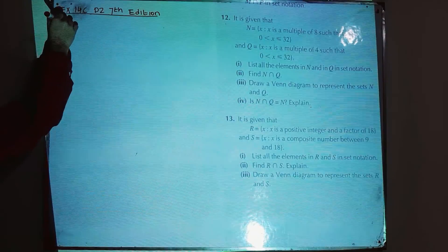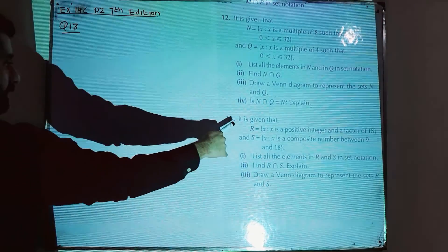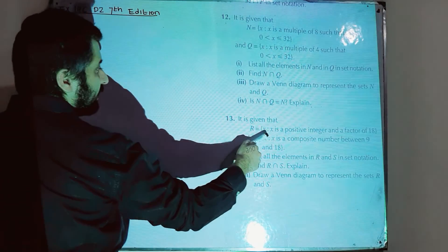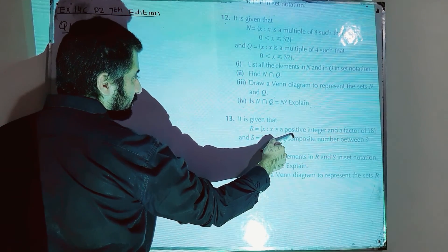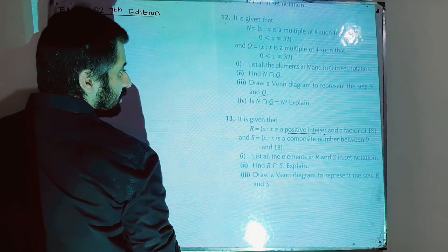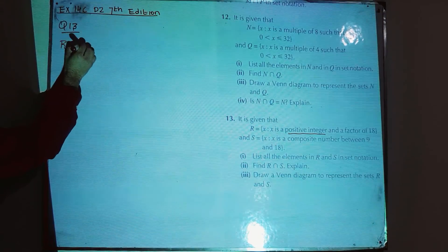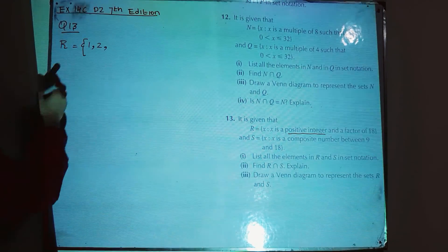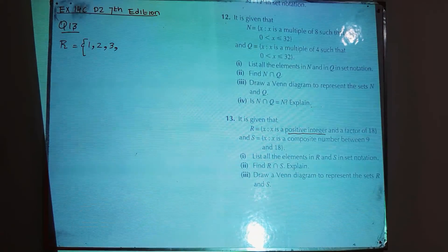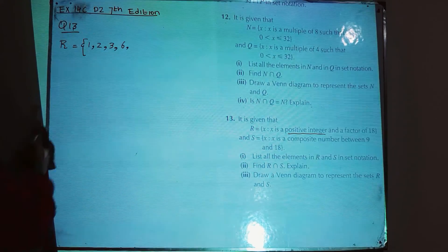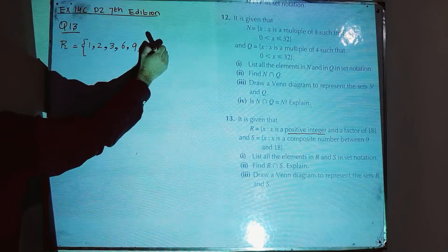Question 13: set R contains positive integers that are factors of 18. Writing R in set notation: 1 is a factor of 18, 2 is a factor of 18, 3 is a factor of 18, 6 is a factor of 18, 9 is a factor of 18, and 18 itself. So R = {1, 2, 3, 6, 9, 18}.